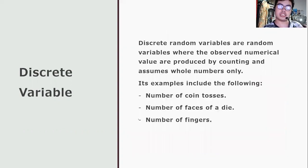Now we're going to discuss discrete and continuous variables. Discrete random variables are random variables where the observed numerical value are produced by counting and assumes whole numbers only from zero and above. We can relate discrete random variables with finite sets because both of them are countable, and this can be counted by whole numbers only.